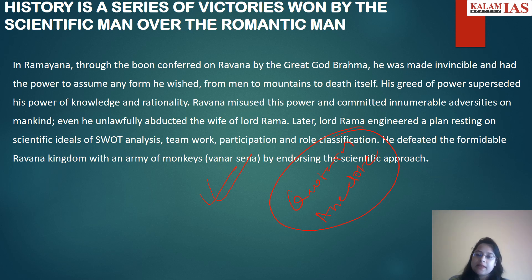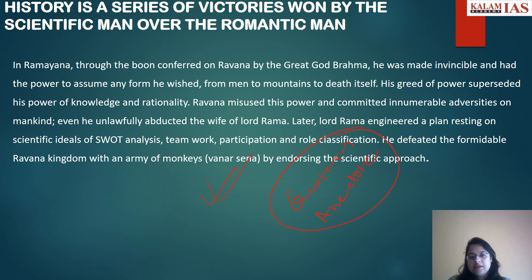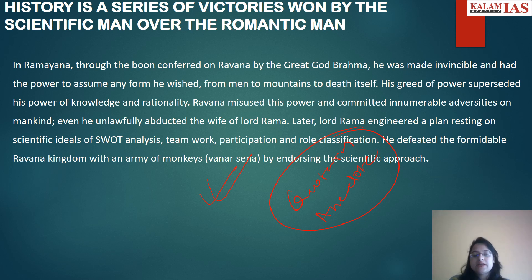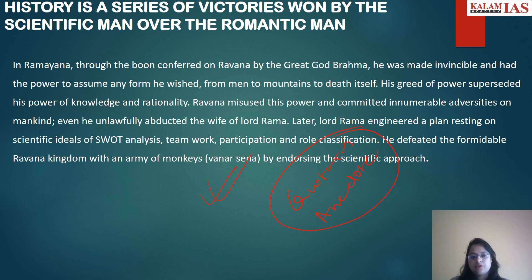By this anecdote, you are telling that it is the scientific approach — the logic and practical approach devised by the scientific man — that is responsible for the victory over the romantic man. You just have to justify the whole meaning of the essay in the anecdote. Then we start with the body part.